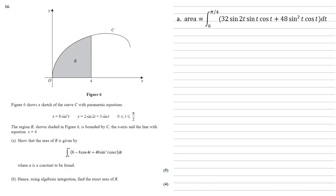We've got an integral ending in 48 sine squared t cos t as required with the correct bounds, but we've got 32 sine 2t sine t cos t at the beginning and we're aiming for 8 minus 8 cos 4t, so we need to convert this.